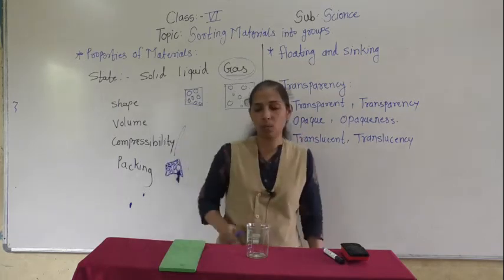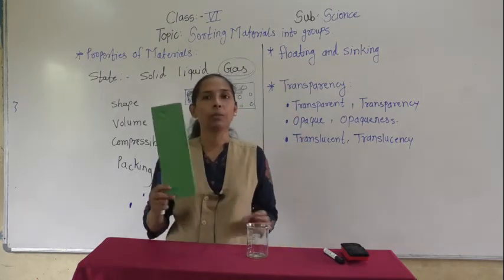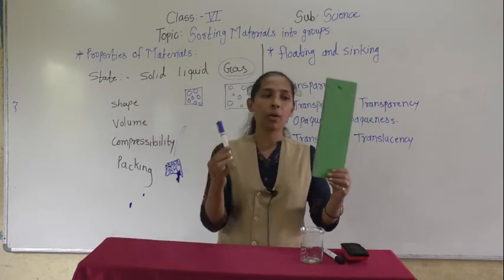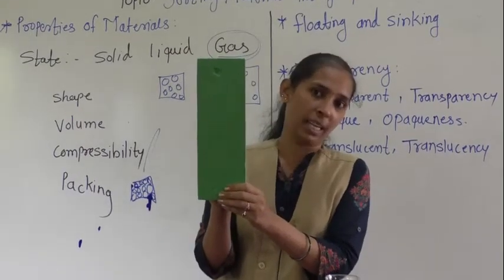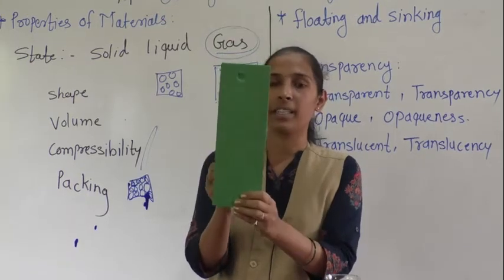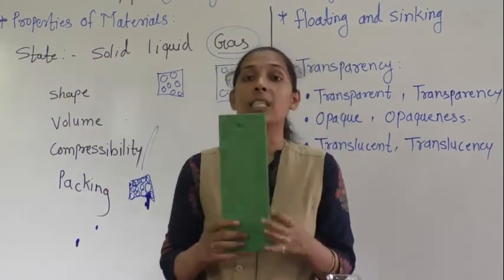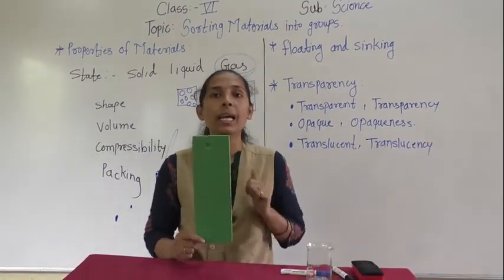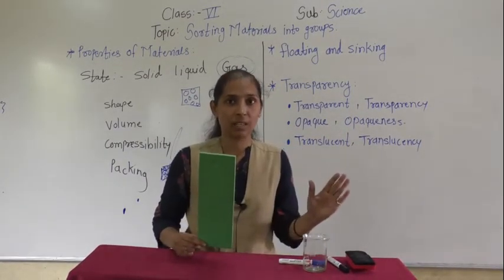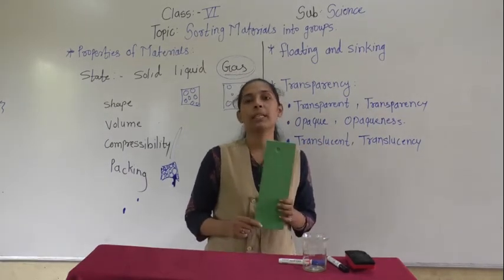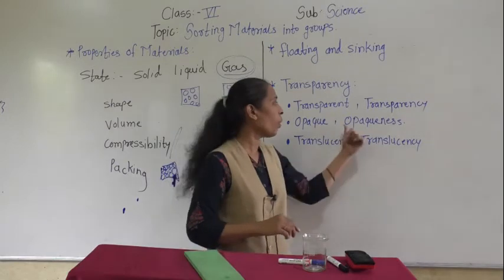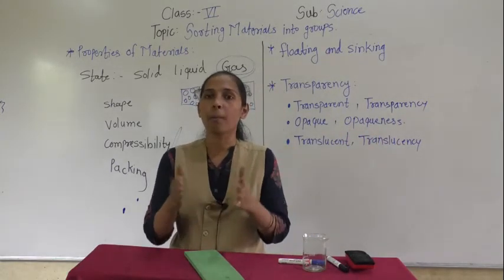Next, let's discuss opaque. I am holding this cardboard — now I will hide the marker behind the cardboard. Can you see it? You will not be able to see the marker because it is hidden behind the cardboard. This cardboard is an opaque material. The material through which we cannot see any object is called an opaque material, and that property is called opaqueness.